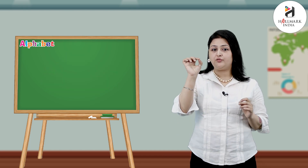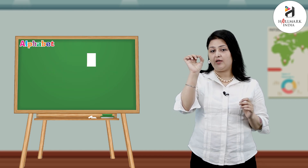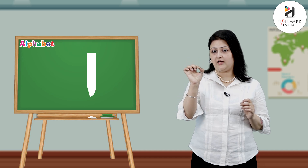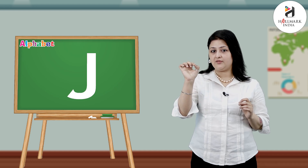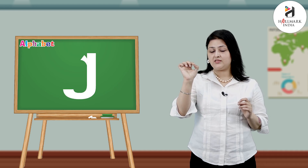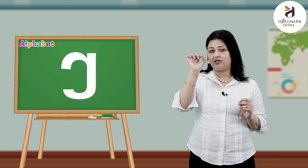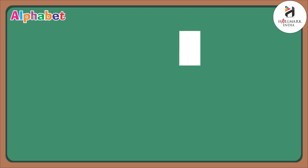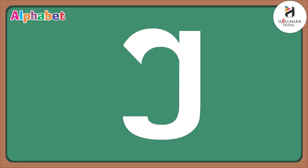How to make the small g: what you need to do is make a circular line like this and a connecting small circle. That makes the small g.